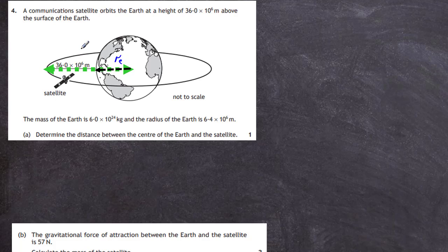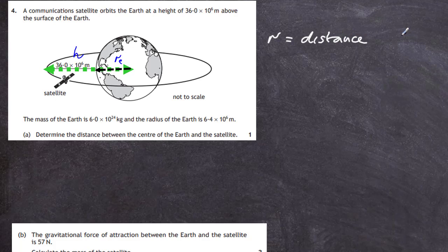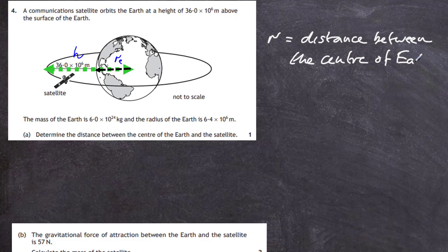The height the satellite is above the surface we'll call H. The distance between the centre of the Earth and the satellite we'll call R. R is the distance used when working out the gravitational force of attraction between two objects — we always measure it from the centre. So R is the distance between the centre of the Earth and the satellite.